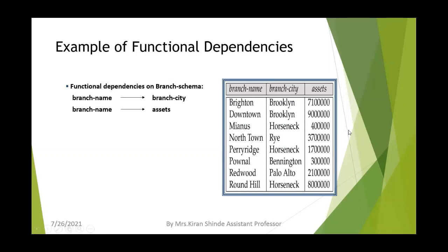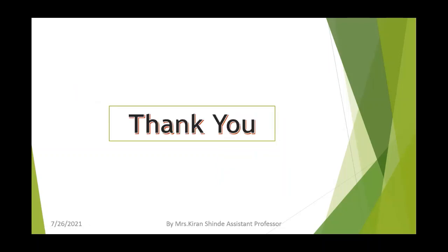In another table, branch name is kept as unique and plays the role of a primary key. Branch name can uniquely determine the branch city, and branch name can also uniquely determine the assets with respect to that specific branch of the bank. These are further examples of functional dependency.